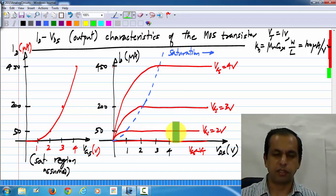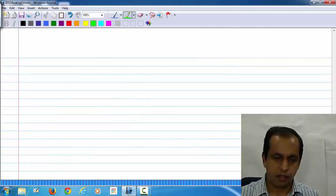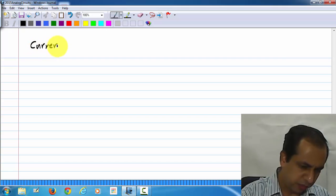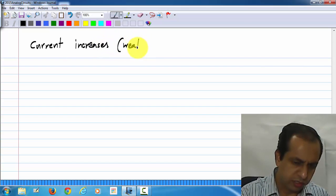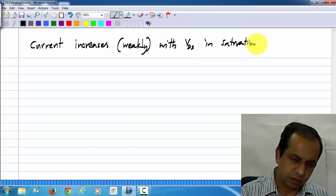It turns out, this is not truly the case. The current does increase with VDS weakly though, in this region as well. So, current increases weakly with VDS in saturation region.